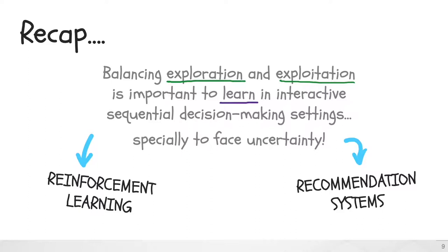So far, we have discussed the importance of balancing exploration and exploitation to learn in interactive sequential decision-making settings, such as reinforcement learning and recommender systems, especially when the decision-making agent faces an unknown or uncertain environment. The field of reinforcement learning provides important tools to address this problem, specifically through solutions that face the multi-armed bandit problem. Multi-armed bandits can be seen as a simpler but powerful instantiation of reinforcement learning, and in recent years recommender system works have taken inspiration from bandit solutions.